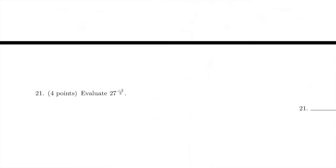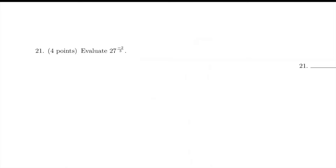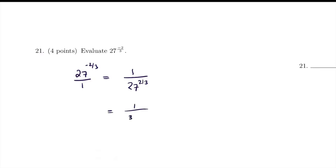Number 21 — simplify using laws of exponents. We have 27 to the power of negative 2/3. A negative exponent means we take the reciprocal: 1 over 27 to the 2/3. Rewrite as 1 over (cube root of 27) squared. Cube root of 27 is 3, so we have 1 over 3 squared, which is 1/9.